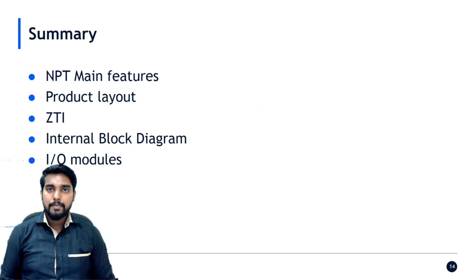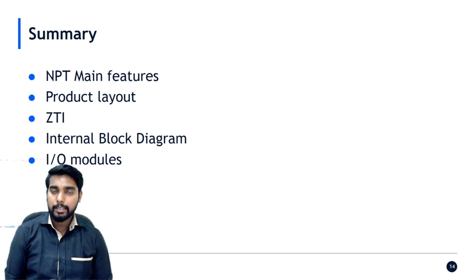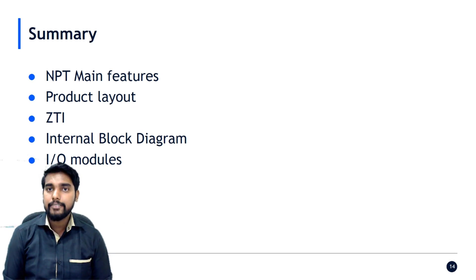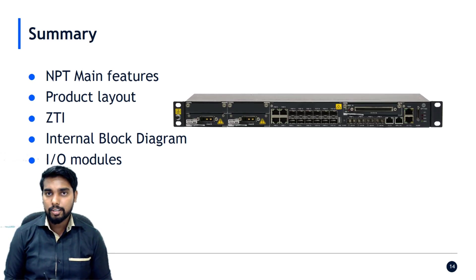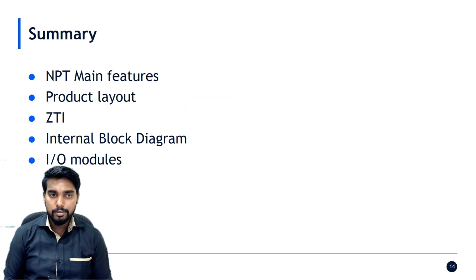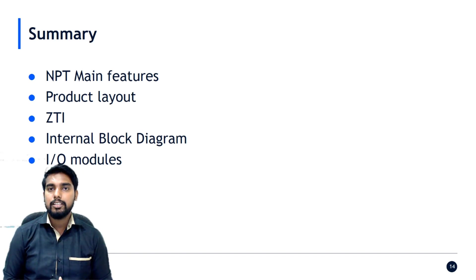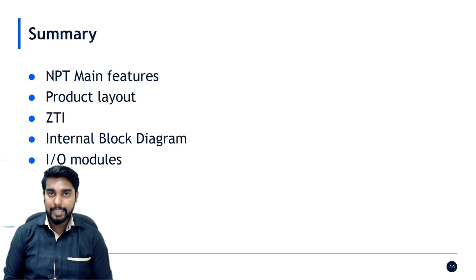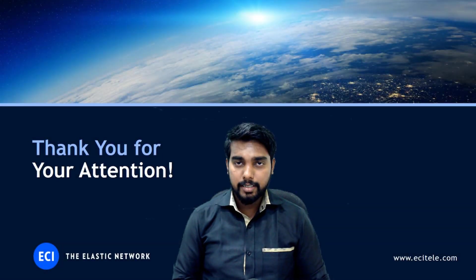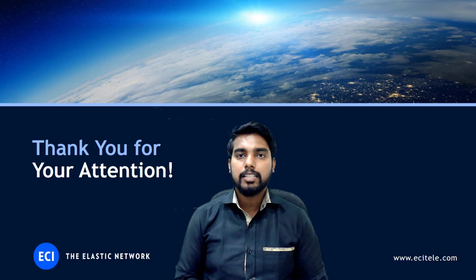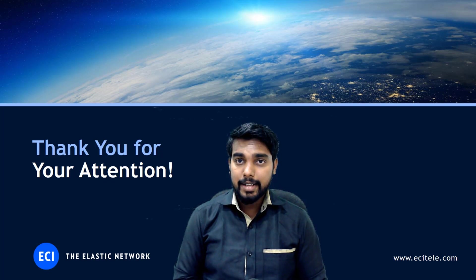In summary, we covered NPT 1022's main features: how it was introduced in version 7.5 as an IP MPLS device in the NPT 1020 family, the product layout including the INF section and traffic slot, ZTI, the internal block diagram, and all IO modules — both pure packet cards and CES cards — supported in the traffic slot. Thank you for watching, and I'll see you in the next part covering more IP concepts related to ECI NPT.